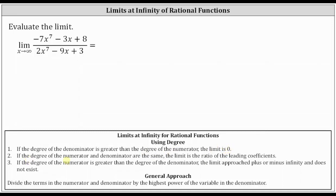Number two: if the degree of the numerator and denominator are the same, the limit is the ratio of the leading coefficients. And number three: if the degree of the numerator is greater than the degree of the denominator, then the limit approaches plus or minus infinity and does not exist.